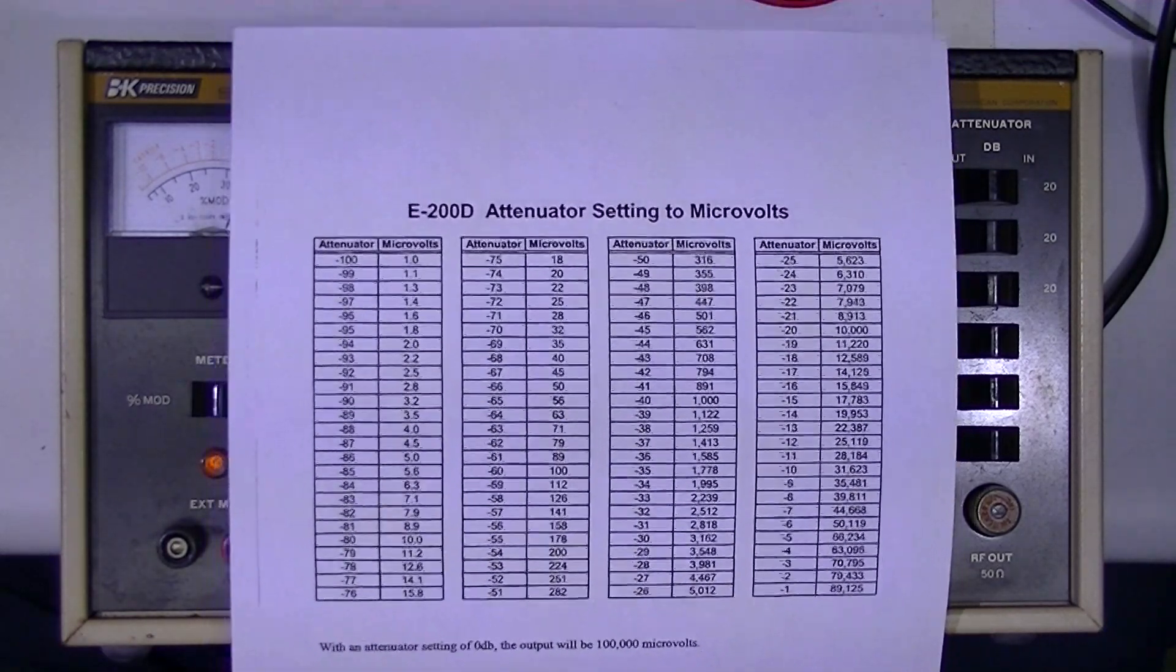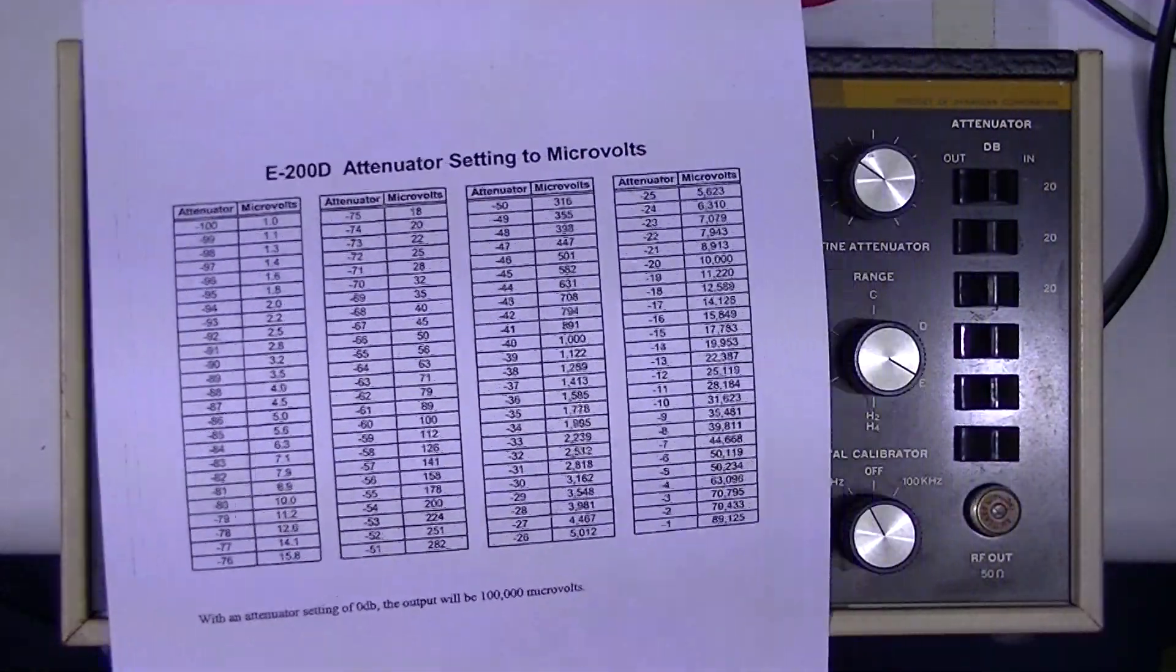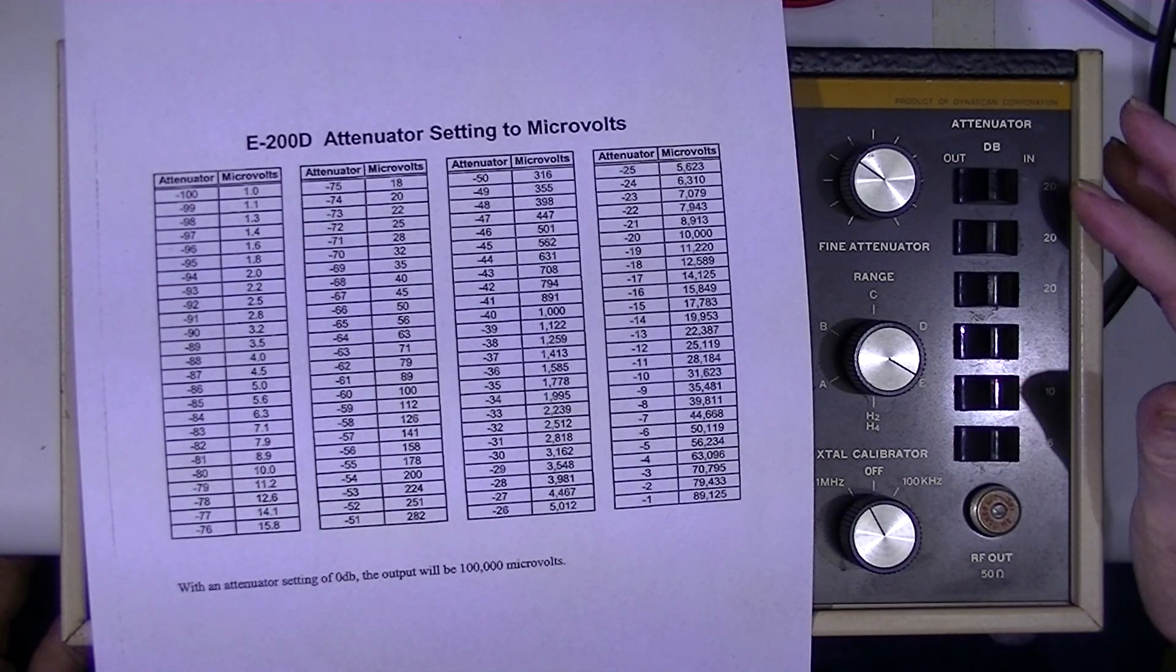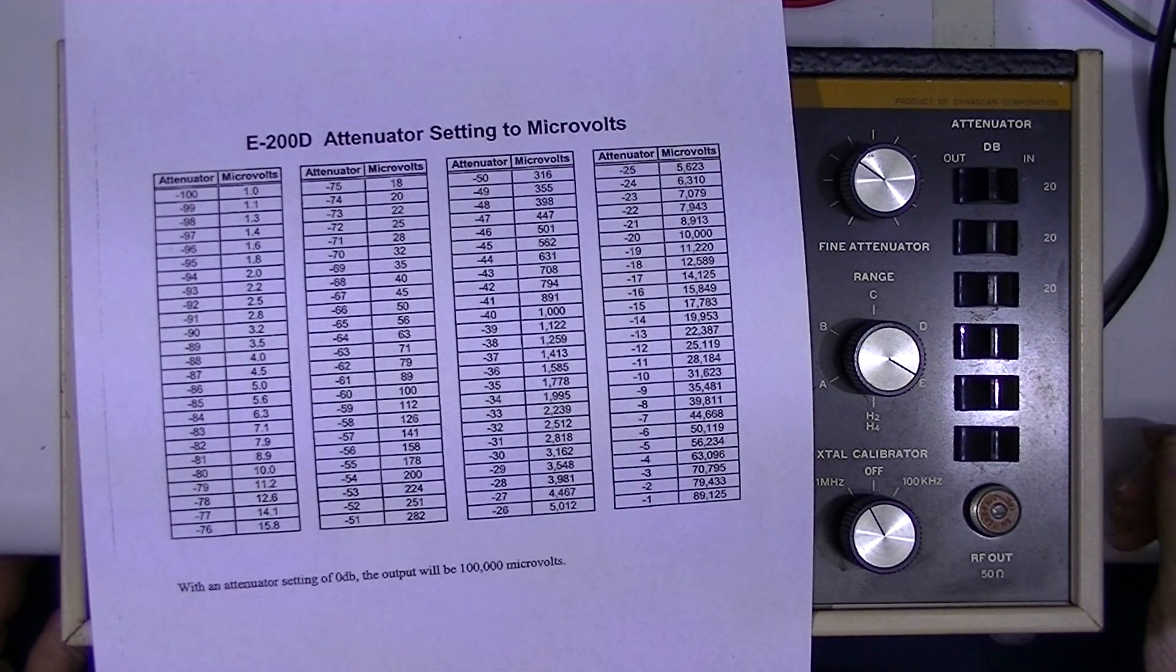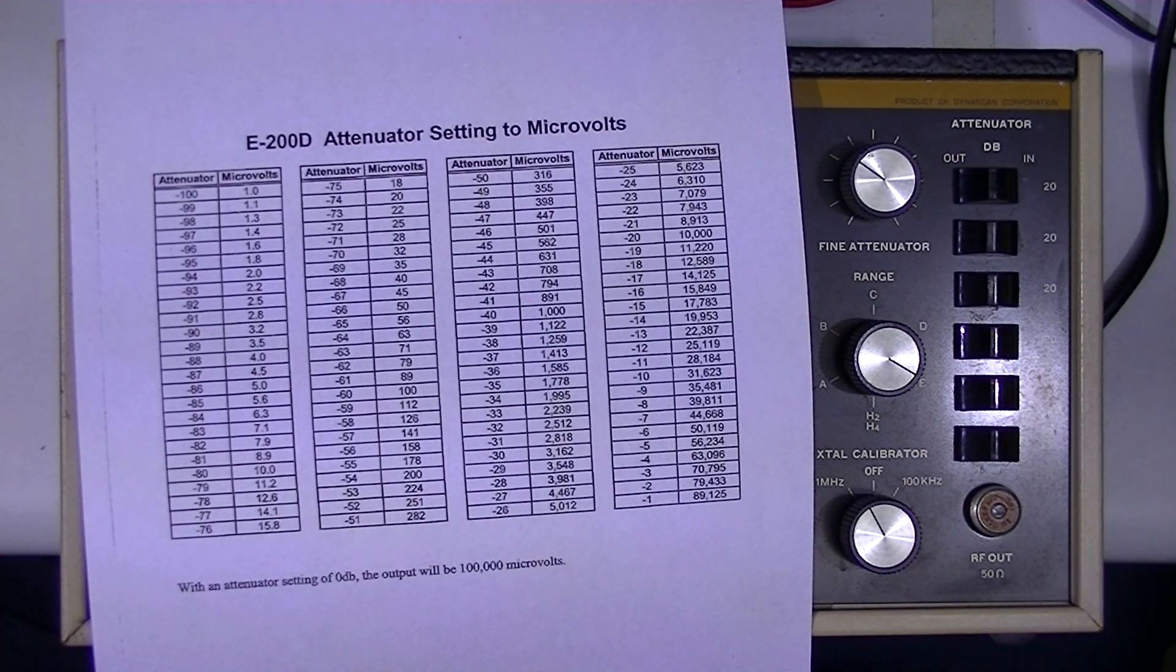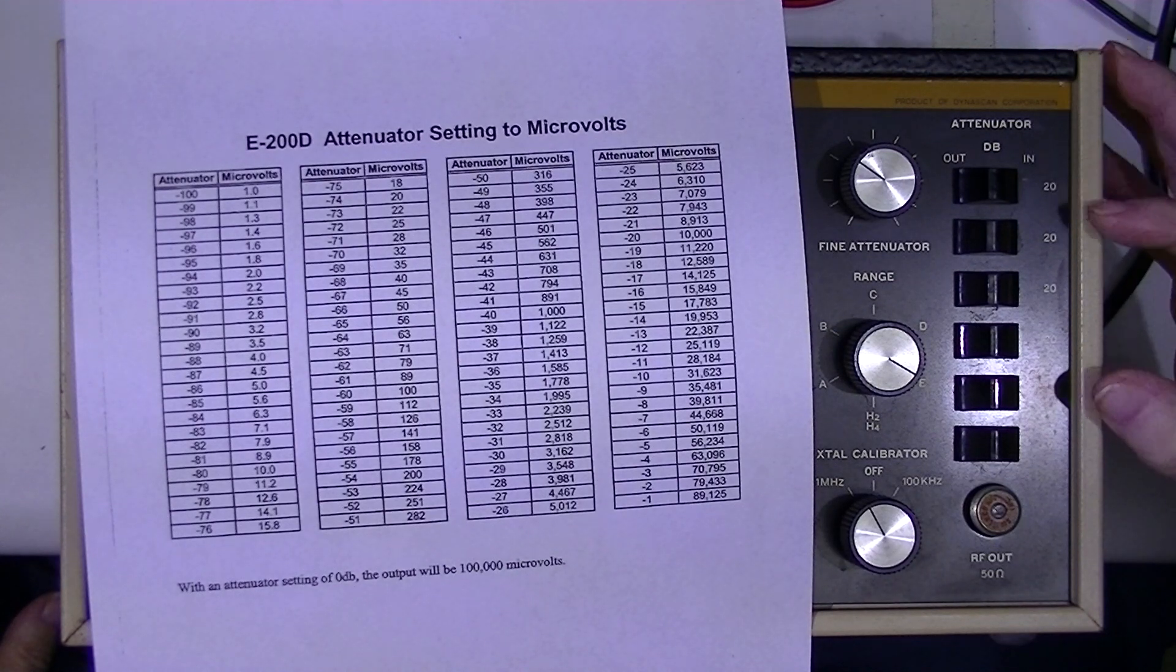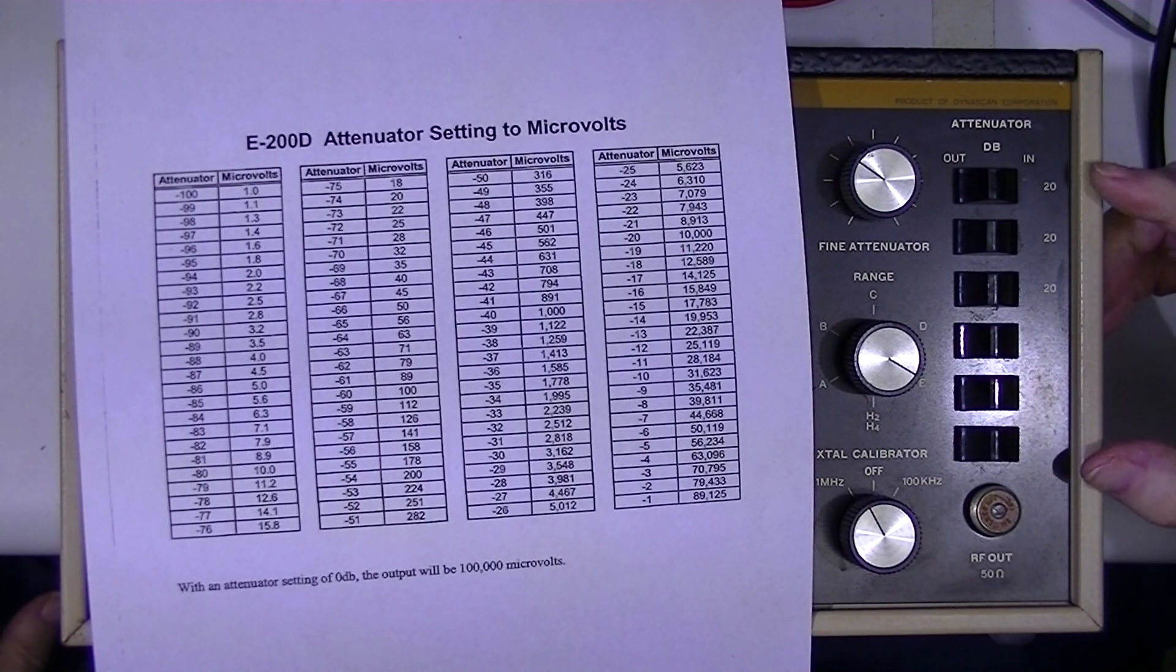Once the meter is set to 0 dB, there's a set of attenuator switches here. And I can switch in various amounts of attenuation and I can get it down to individually or in total 1, 2, 3, 4, 80 dB, 90 dB, a total of 96 dB of attenuation.